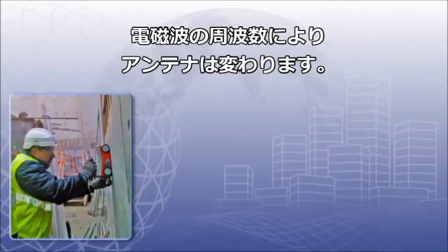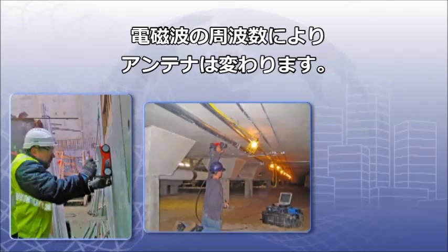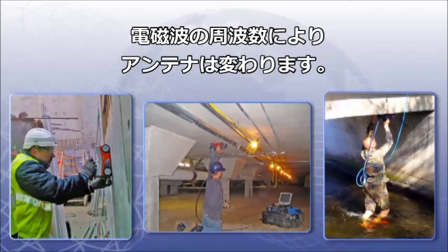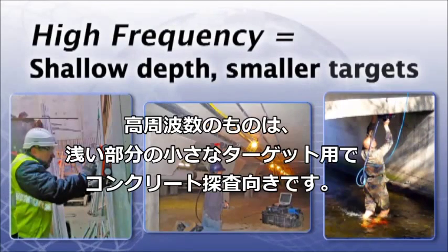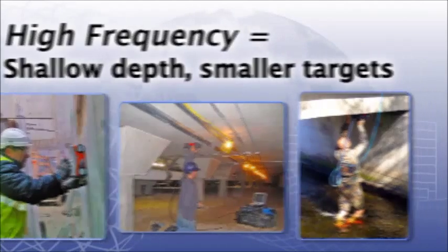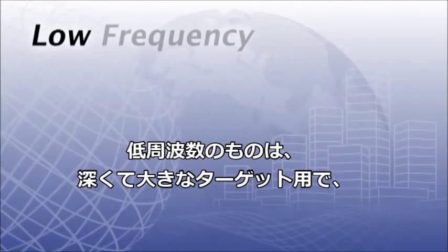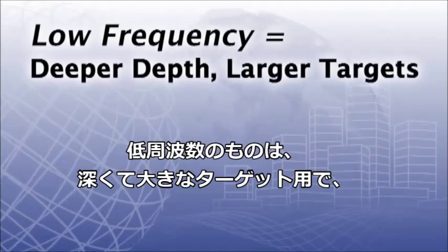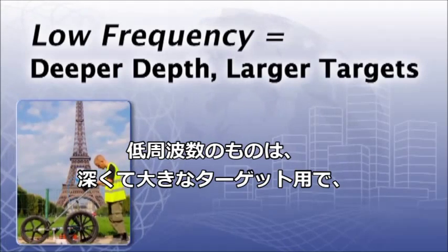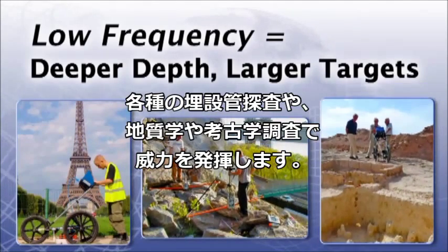Antennas come in various frequencies depending upon your application. High frequencies are for shallow depth and small targets, ideal for concrete applications. Low frequencies are for typically deeper depth and larger targets, such as utility, geological, and archaeological applications.